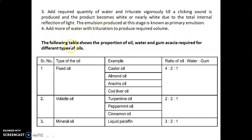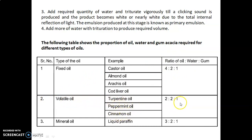The following table shows the proportion of oil, water, and gum acacia required for different types of oils. For fixed oils — such as castor oil, almond oil, arachis oil, and cod liver oil — the ratio of oil to water to gum is 4:2:1. For volatile oils — such as turpentine oil, peppermint oil, and cinnamon oil — the ratio is 2:2:1. For mineral oil or liquid paraffin, the ratio is 3:2:1.